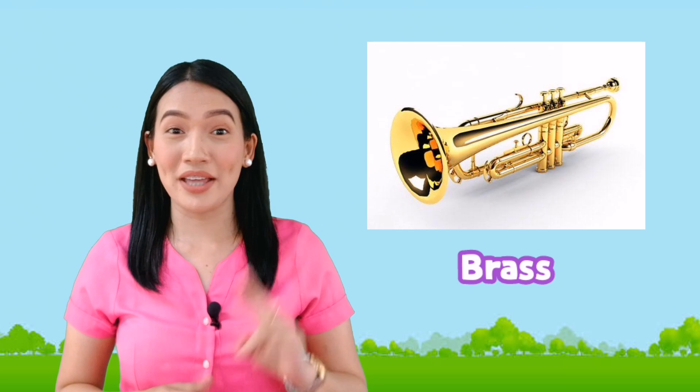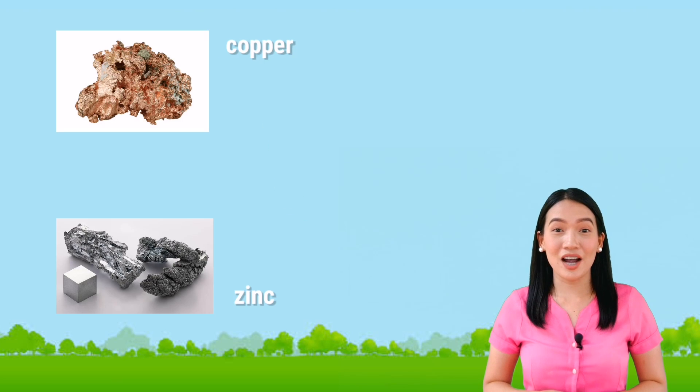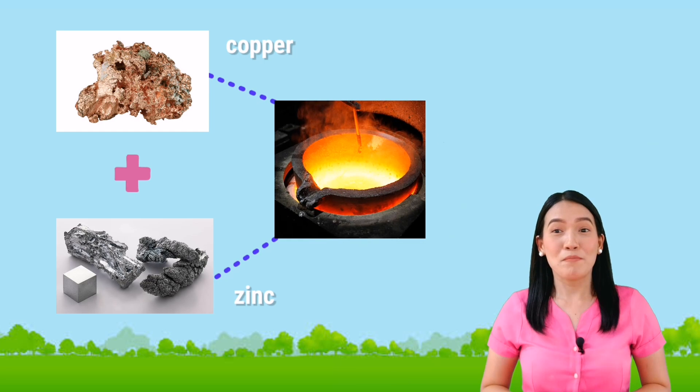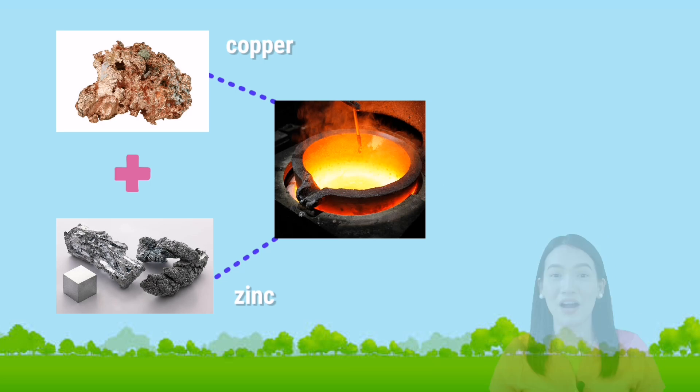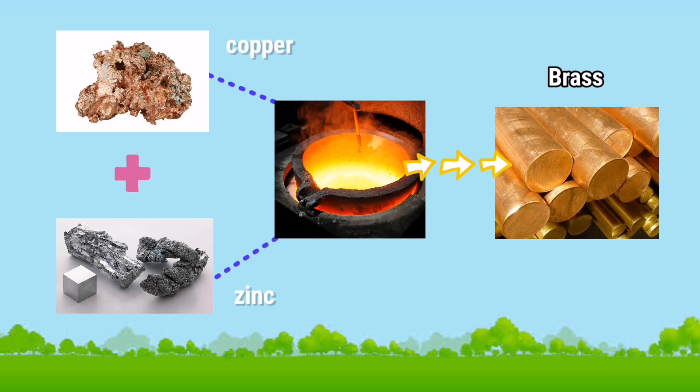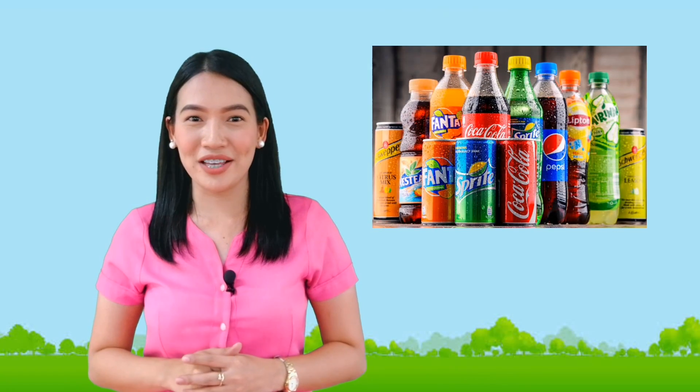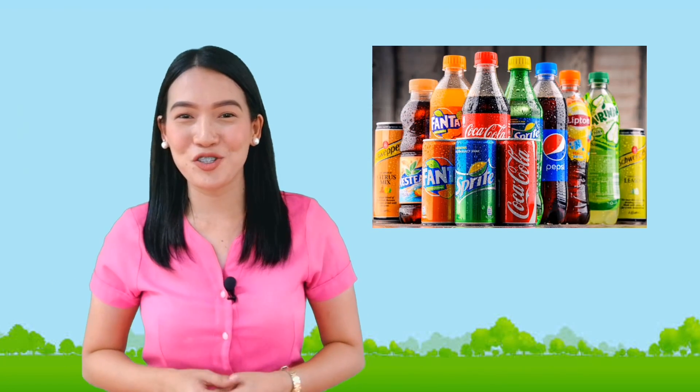Are solutions formed only by mixing a solid with a liquid? The answer is no, not really. Look at this shiny trumpet — it is made of brass. Do you know that brass is a solution of two metals? Copper and zinc are metals in solid form which are melted together, mixed uniformly, and then solidified to form a solution called brass. Perhaps you also wonder if we can mix gas in a liquid to form a solution. I know very well that you are all very fond of drinking cold soda drinks — and so am I!